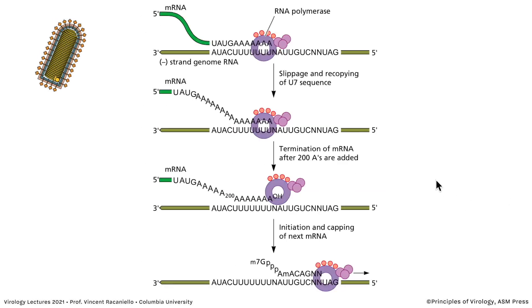How does polyadenylation occur in VSV? At the intergenic region between genes, there's a stretch of U residues. The polymerase gets there and starts to slip — it keeps making A's because it's stuttering at the U, copying them over and over again. After about 200 A's are added, it moves on to the next gene. That's how you get your poly-A tail on the mRNA, because there are only seven A's encoded in the intergenic region — the slippage and recopying gives you the poly-A. Then the polymerase stops and reinitiates at the next mRNA, and that stopping and starting is antagonized by the N protein bound to the mRNA.